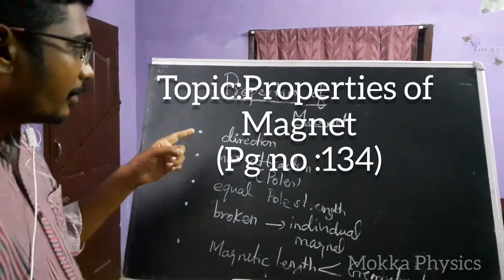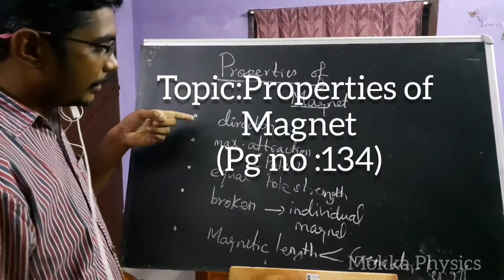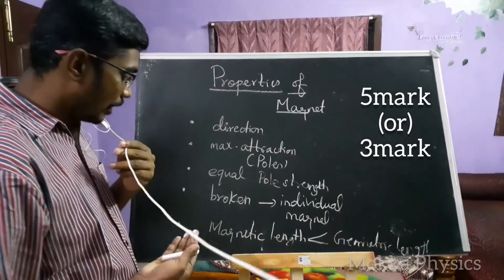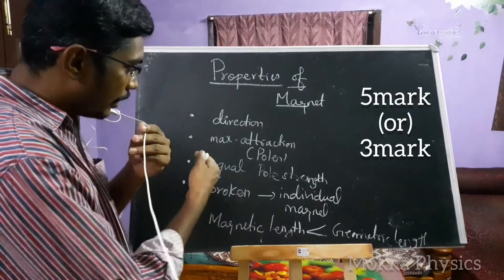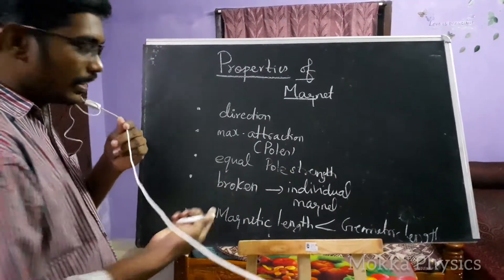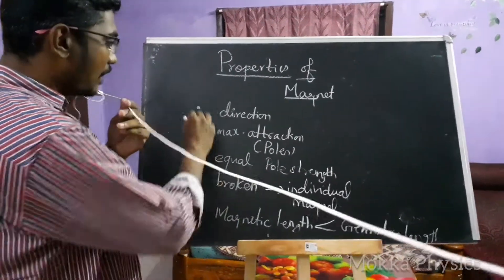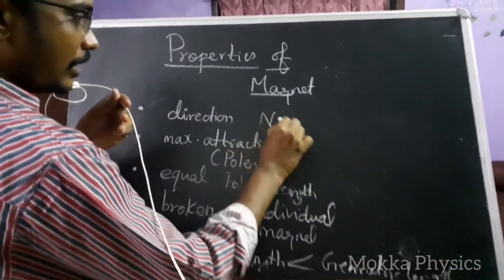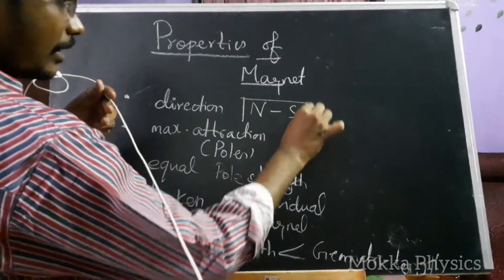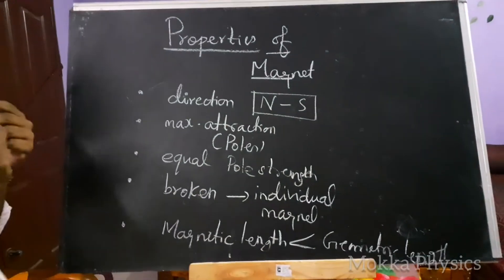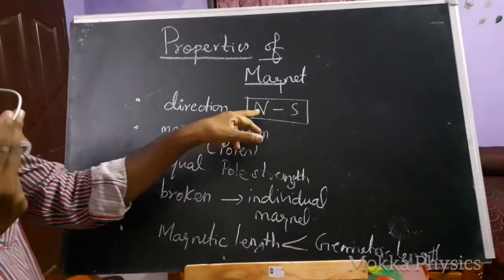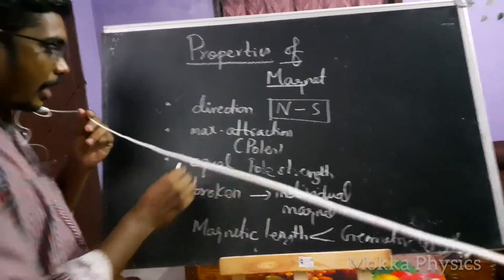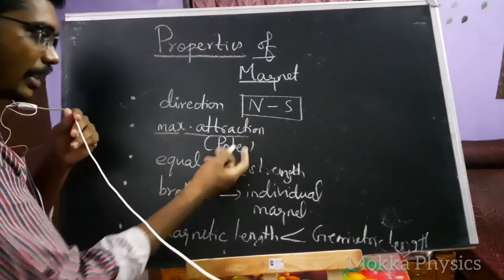Now we are going to discuss some of the properties of a magnet. This is a five-mark or three-mark topic — you can get five points. A freely suspended magnet will always come to rest in the north-south direction. This is a property.